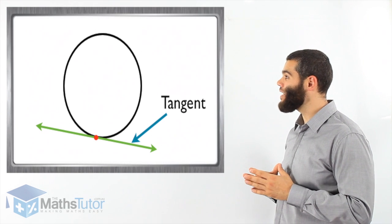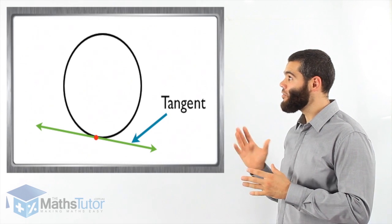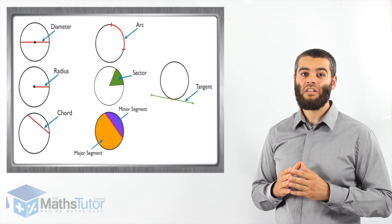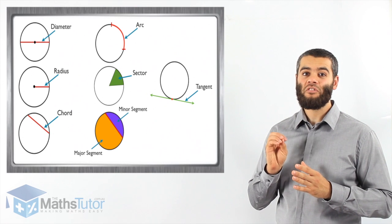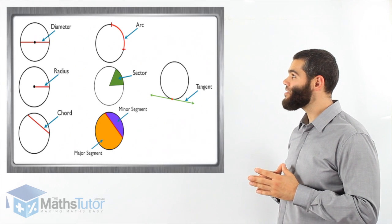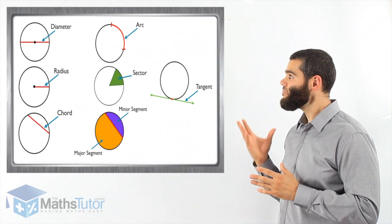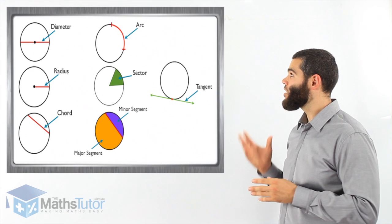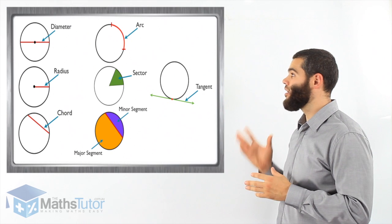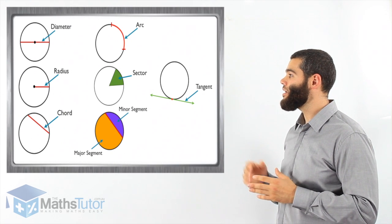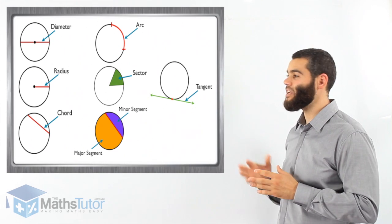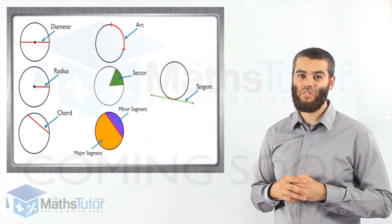These are the parts of a circle — you need to memorize them and straight away recognize and identify them. We saw the diameter, the radius, the chord, the arc, the sector, the minor segment, the major segment, and the tangent. These are the parts of a circle.